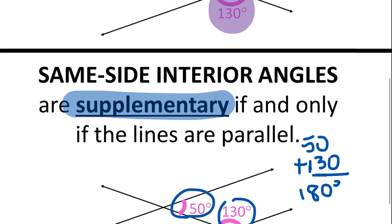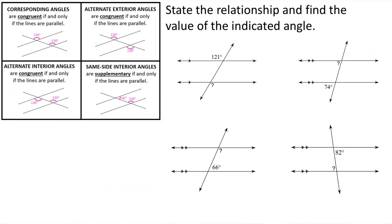So let's look at a couple of examples. It says: state the relationship and find the value of the indicated angle. For the first one, if I look at these two angles — 121 and the question mark — those two angles would be alternate exterior angles, or ALT EXT for short. Alternate exterior angles should be congruent, which means they are going to be equal. So for this first picture, our question mark is going to also be 121 degrees.